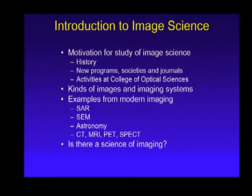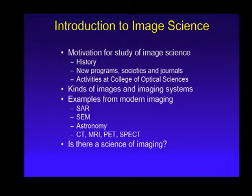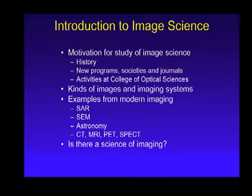It always pays to know a little bit about the origins. As you saw in some of the preliminary talks yesterday, image science obviously begins with the human eye and the formation of an image on the retina. We relate to images in a very profound way. A good image can convey a thousand words or more of information — it's a very effective way for humans to learn about the world around them through imaging systems.